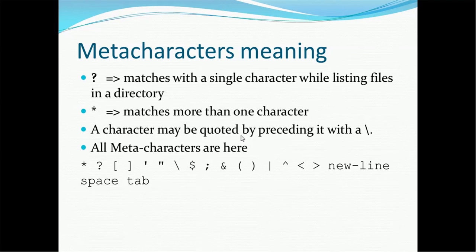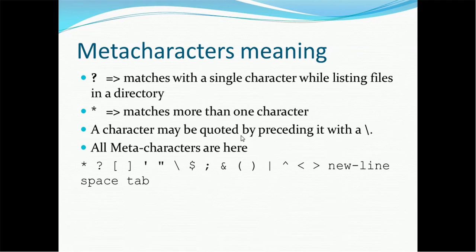The meta characters are listed here: asterisk, question mark, open rectangle bracket, close rectangle bracket, single quote, double quote, backslash, dollar, comma, ampersand, open bracket, close bracket, pipe, tilde, less than and greater than symbols, and newline, tab, space, etc. These meta characters have a special meaning, so if you use them in your programming the program might behave differently. Make sure to use them properly.